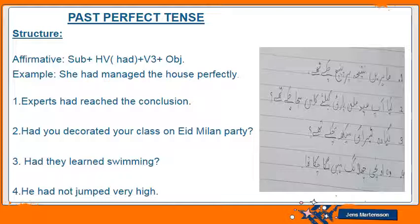The fourth one: 'He had not jumped very high.' To make it negative, 'not' is added. You can also notice the Urdu identification — in all the perfect tenses, endings like 'ja chukha tha', 'kha chukha tha', 'so chukhi thi' are used. This particular ending is used in all the perfect tenses, so you need to remember this identification.